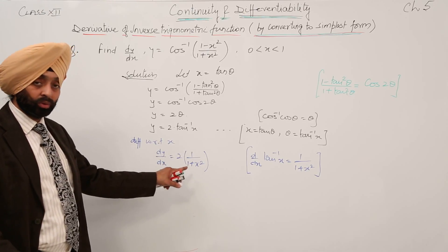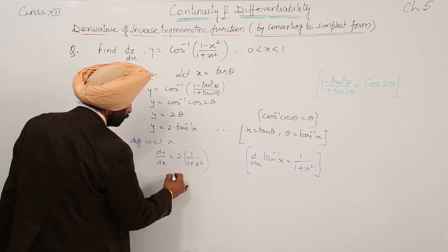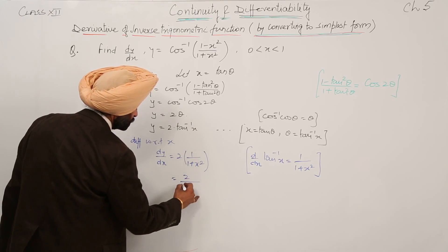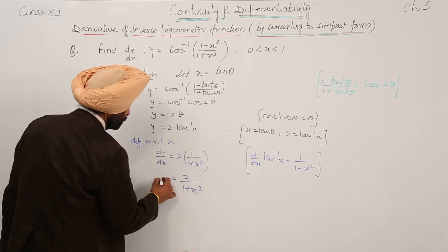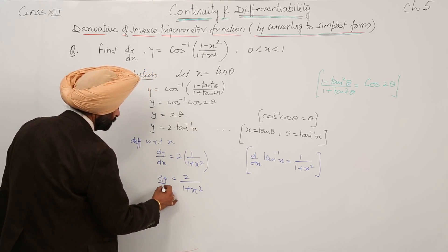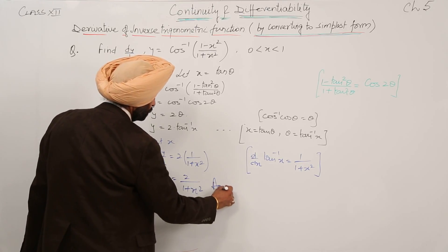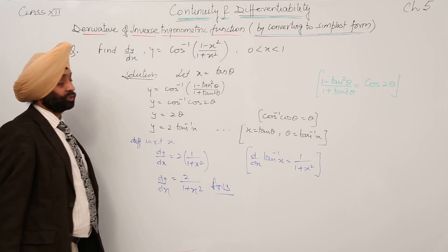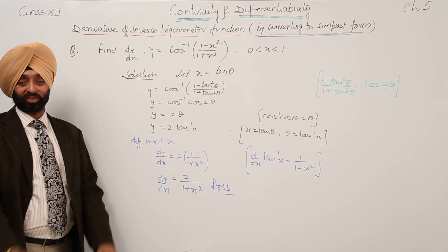Therefore, dy by dx is equal to 2, 1 upon (1 plus x square). So, our answer is dy by dx is equal to 2 upon (1 plus x square). Simple questions.